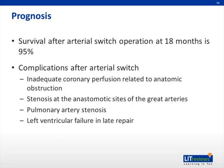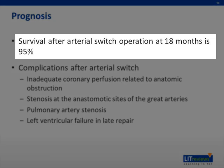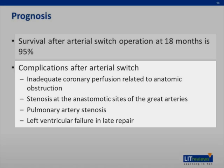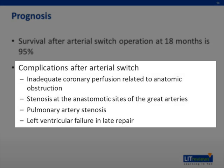The prognosis of transposition of the great arteries is good after repair, with survival after the arterial switch operation at 18 months of 95%. Complications include inadequate coronary perfusion from anatomic obstruction, stenosis at the anastomotic sites of the great arteries, pulmonary artery stenosis, and left ventricular failure in late repair. Pulmonary artery stenosis develops due to the Lecomte maneuver, where the pulmonary arteries are draped over the ascending aorta, causing stretching and subsequent stenosis as the child grows.